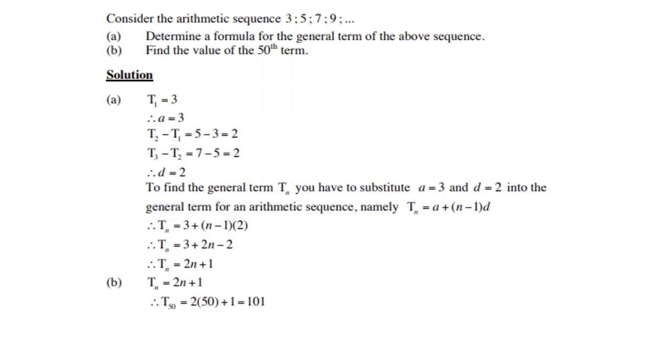Let's look at an example. Consider the arithmetic sequence 3, 5, 7, 9. Let's first determine, is it arithmetic? In other words, is there a common difference? So let's see, 5 minus 3 is 2, 7 minus 5 is 2, 9 minus 7 is 2. So yes, there is a common difference of 2. So therefore, the D is 2. So therefore, this is arithmetic. So we must determine a formula for a general term, and then we must find the 50th term.